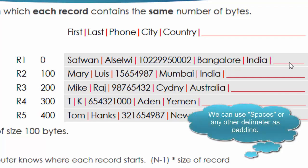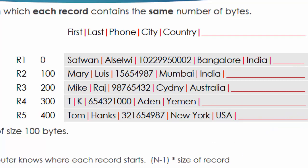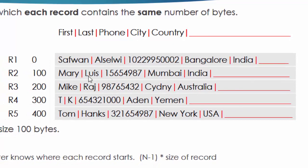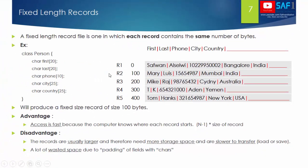Since it is a fixed length record, the remaining space in a record is not left empty — instead, we use underscore characters as padding to fill the rest. Moving to the second record, which contains first name Mary, Louis, mobile number, city, and country — if it is, say, 50 characters, the remaining 50 characters will also be padded with underscores. The same applies for all subsequent records, so each record always totals 100 bytes.